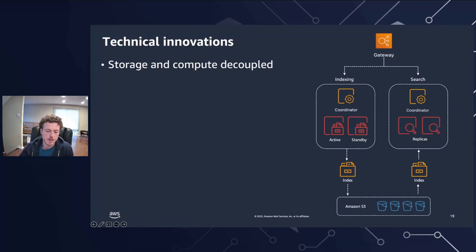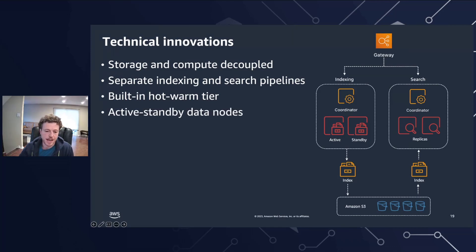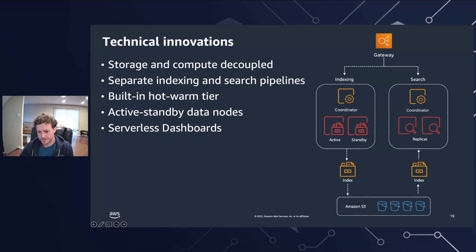There are a few important technical innovations that make Serverless different. First, storage and compute are now decoupled — no longer do you need to provision compute based on the amount of storage volume that you actually need. There are separate indexing and search pipelines, so heavy indexing won't impact search performance and vice versa. Hot and warm tiers of storage are managed by the service, and you are only billed for storage at near S3 prices. Customers are not billed a separate price for hot storage. There are active and standby indexing data nodes deployed across multiple availability zones for high availability. And OpenSearch dashboards are no longer sharing resources with your data nodes — instead, you can access your data through a separate Serverless dashboard's endpoint that is free of charge.